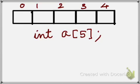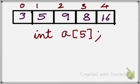For a simple example, let us consider an integer array A with five elements in it and let the elements be three, five, nine, eight and sixteen.